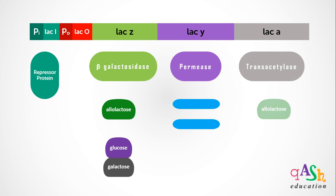Transacetylase is going to use allolactose and convert it into acetylated allolactose. The function of acetylated allolactose is still unknown. Therefore, the molecule allolactose serves as the inducer or effector molecule for the lac operon.